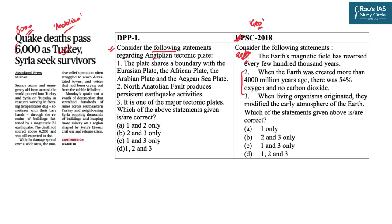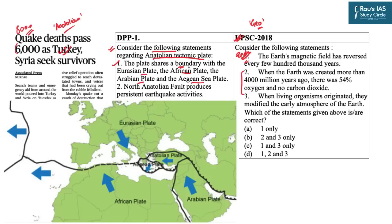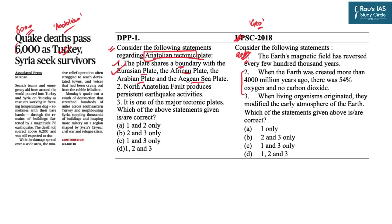The question says: consider the following statements regarding the Anatolian tectonic plate. Statement one says that the plate shares a boundary with the Eurasian plate, African plate, Arabian plate, and the Aegean Sea plate. Some of these are minor plates and some are major plates, so you need to know where this plate lies. This statement is factually correct. Statement two says that the North Anatolian fault produces persistent earthquake activity — as discussed in the news context, this fault line has increased vulnerability multifold. Statement two is also correct.